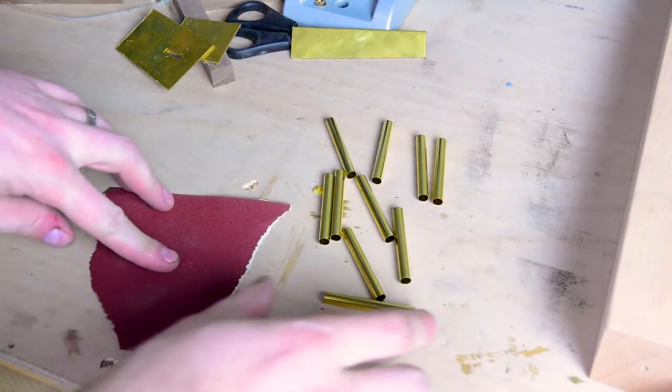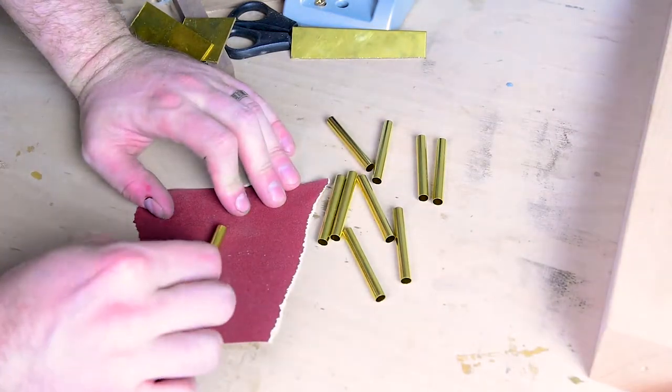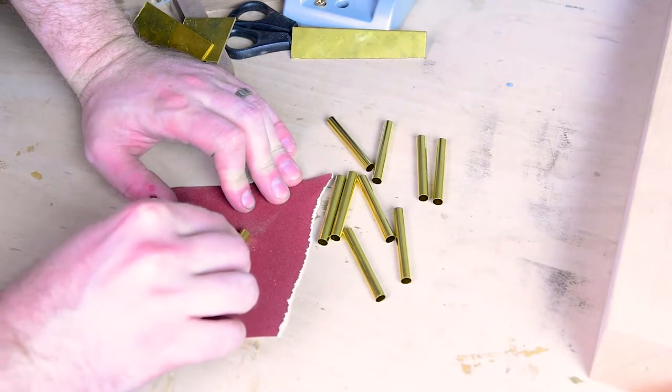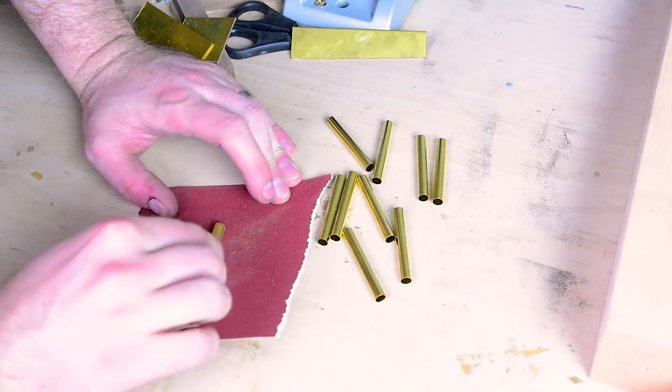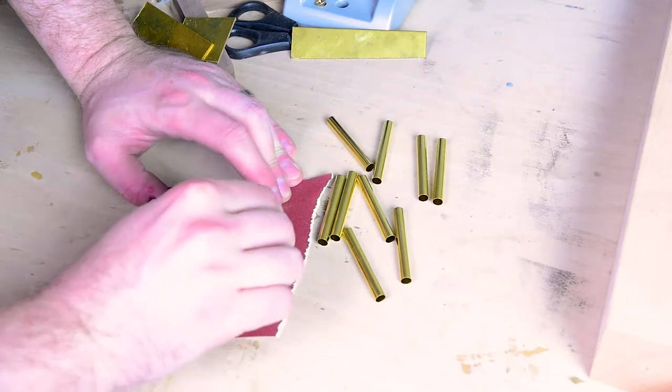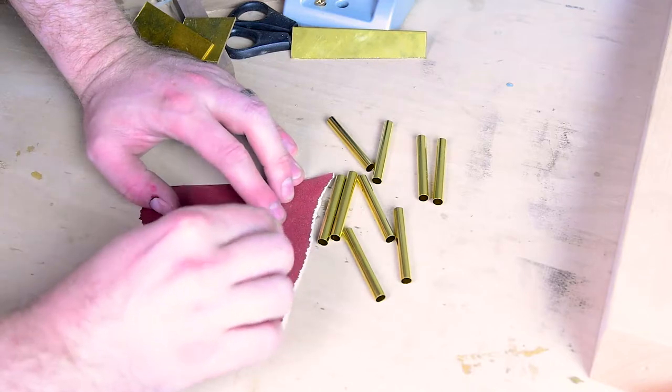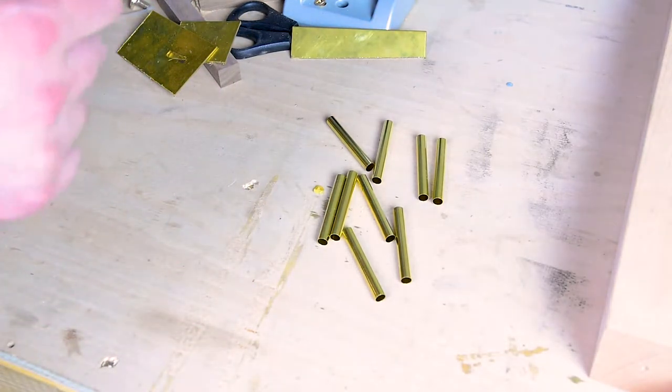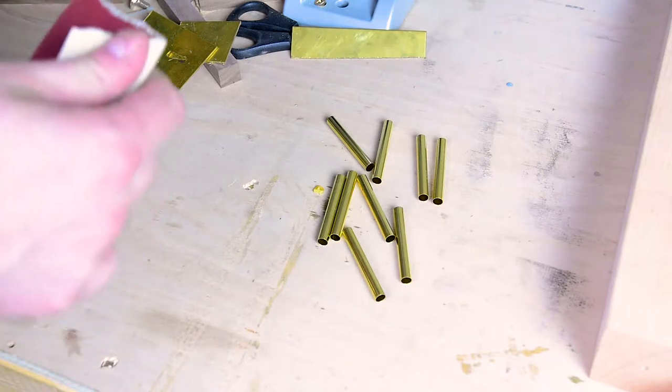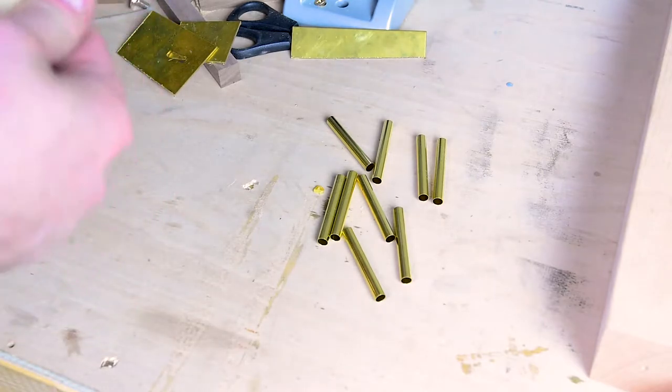Before we can assemble our pen tubes to the wood we've just drilled we've got to get them scuffed up a little bit. So a little bit of sandpaper on the brass tube just gives it something for the glue to mechanically key to. As the polished brass is very pretty but not very effective. So you can either do it flat on the table or you can just get sandpaper in hand and give it a bit of a twirl.